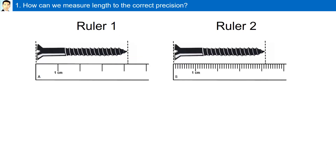How can we measure length to the correct precision? Here we have two rulers: ruler 1 and ruler 2. In example A, the screw is between 4 and 5 centimeters. We know definitely it is 4 centimeters and we can estimate one beyond that. Therefore, we can report our measurement as 4.2 centimeters.